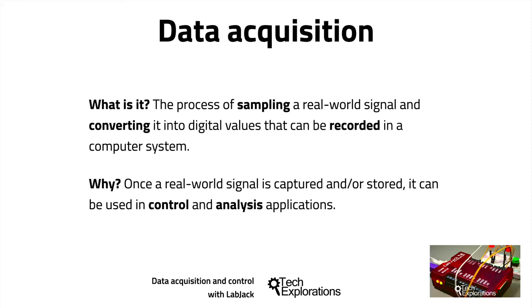Computers can use this number to control actuators, which are devices that produce some kind of work. Examples of actuators are motors, industrial ovens, relays, and solenoids. I'll talk about control in the next slide.